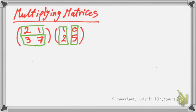Bismillahirrahmanirrahim. How we can multiply 2 by 2 matrices? We start by multiplying the first row by the first column of the second.